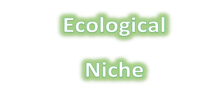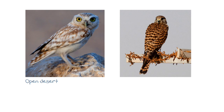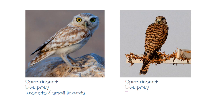In this video, we're going to look at ecological niche. Here are two photos that I've taken — these guys both live around my house in Qatar. Let's consider how they both live. The Lilith Owl lives in the open desert, hunting live prey such as insects and small lizards. The Common Kestrel also lives in the open desert, hunting live prey such as insects and small lizards.